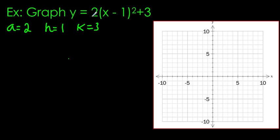So now from this, I can write my mapping rule. My mapping rule looks like this: x, y goes to x plus h, plus 1, and then ay, so 2y plus 3.